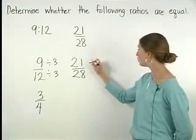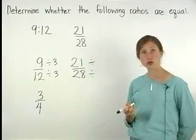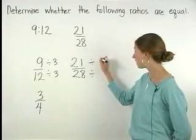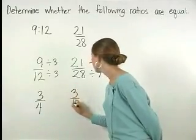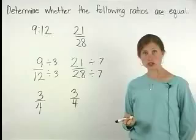If we divide the numerator and the denominator of 21 twenty-eighths by 7, we get the equivalent fraction 3 fourths, which is in lowest terms.